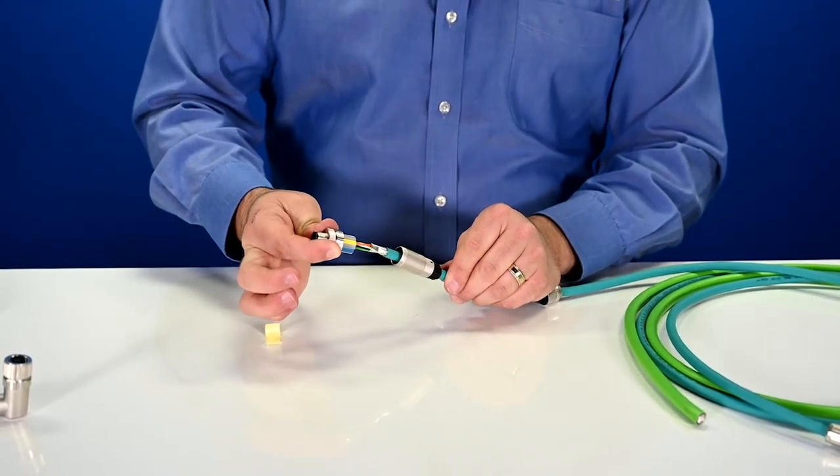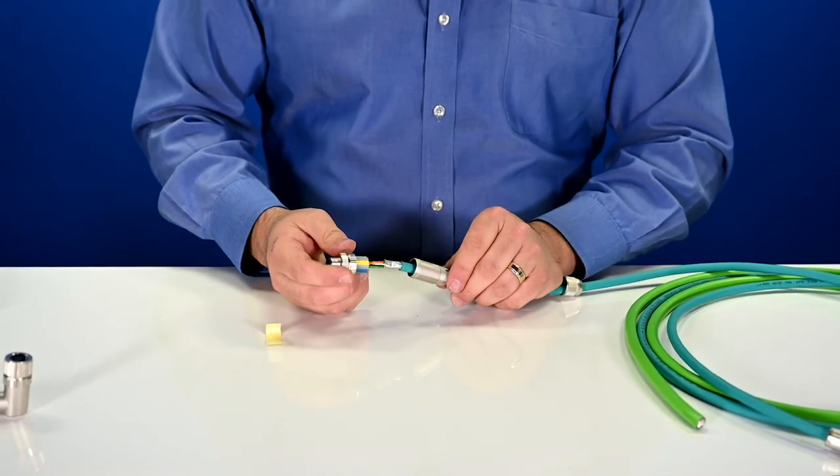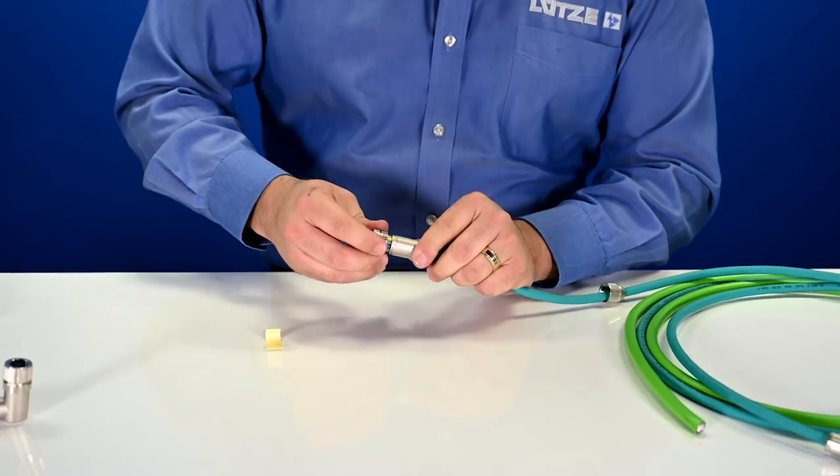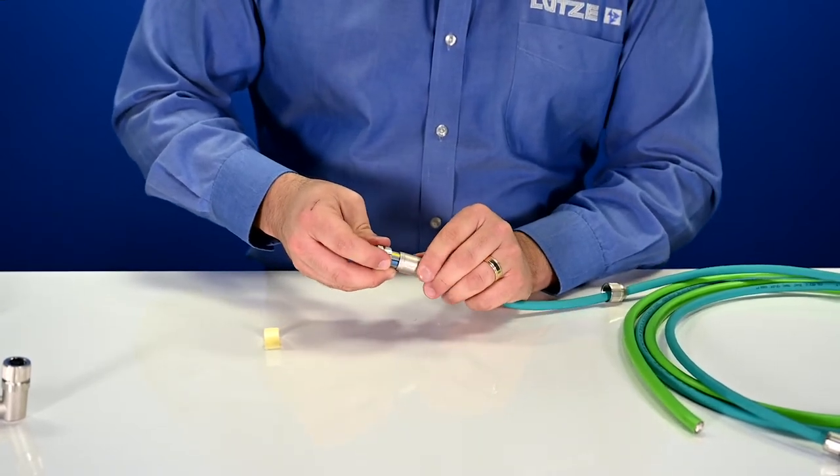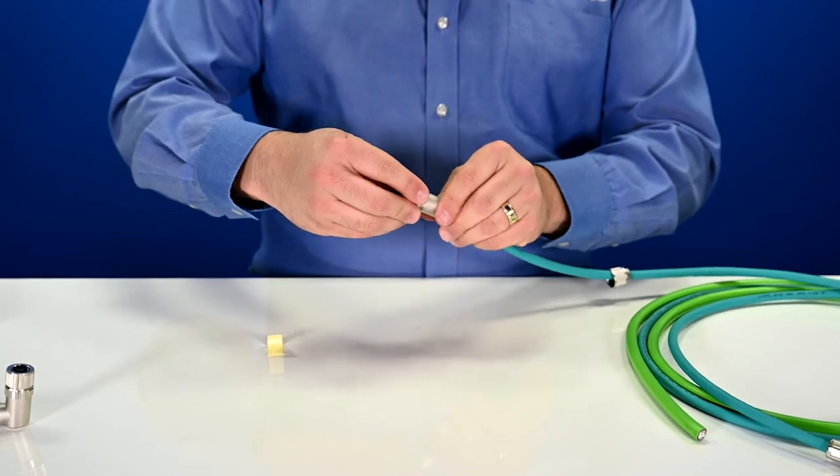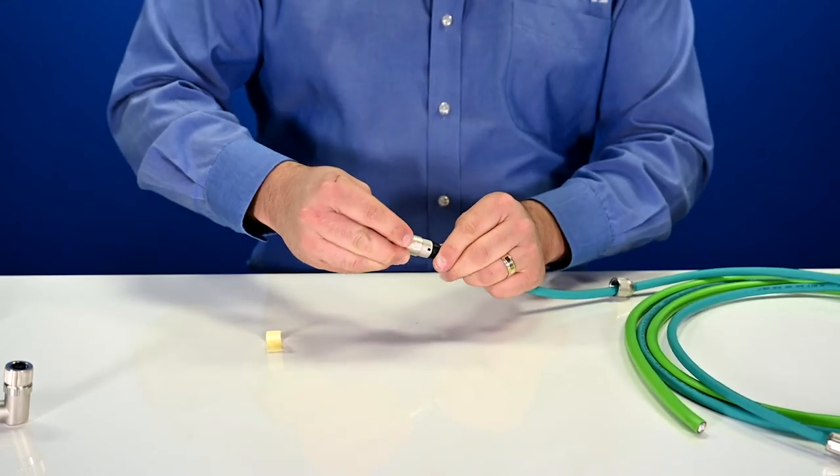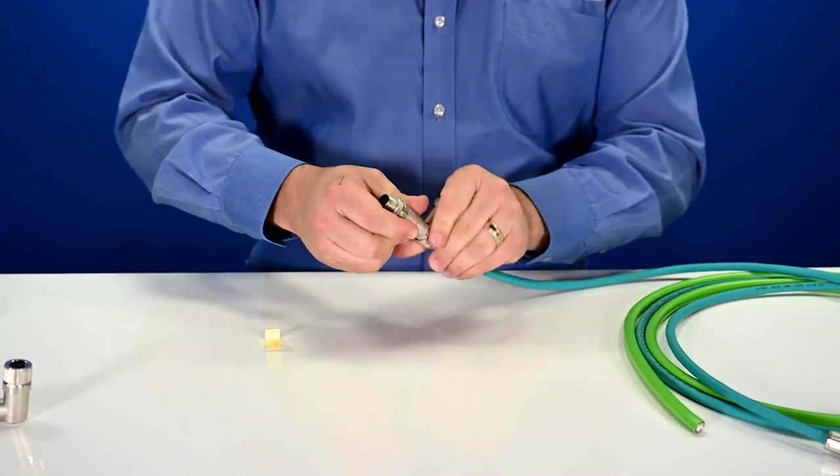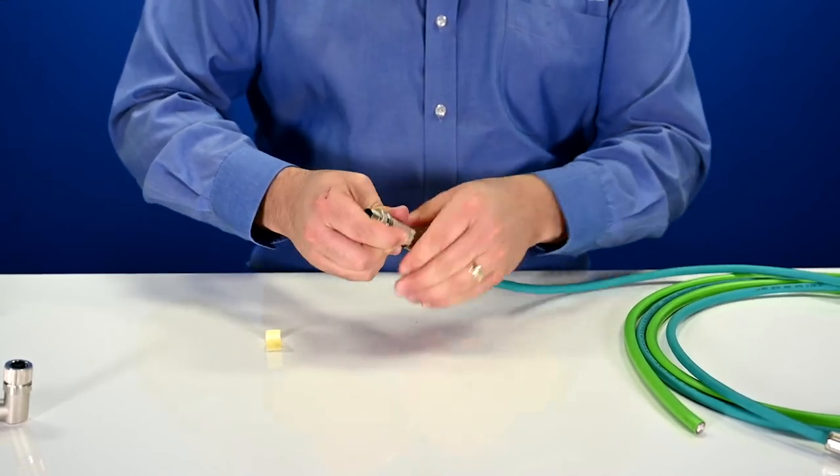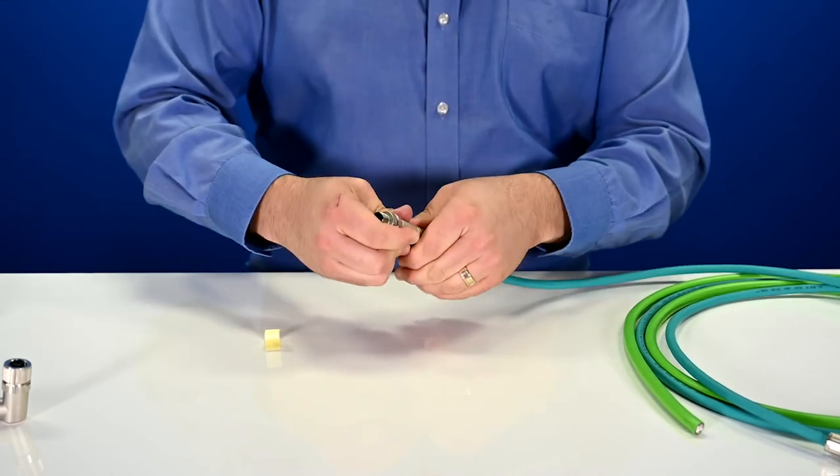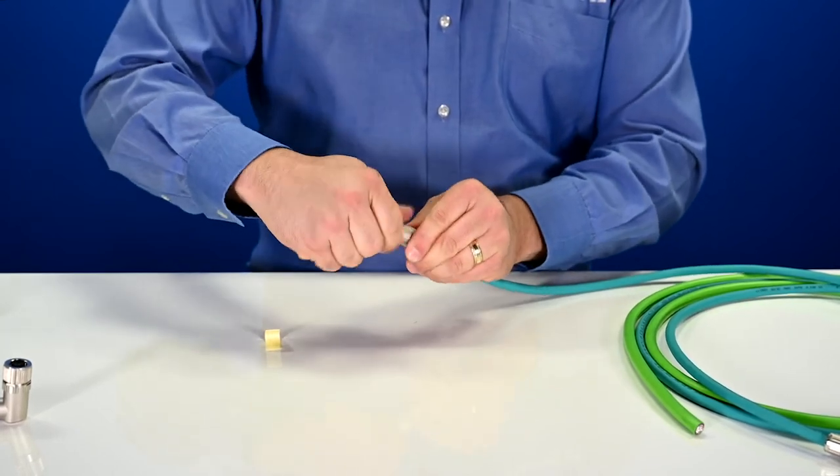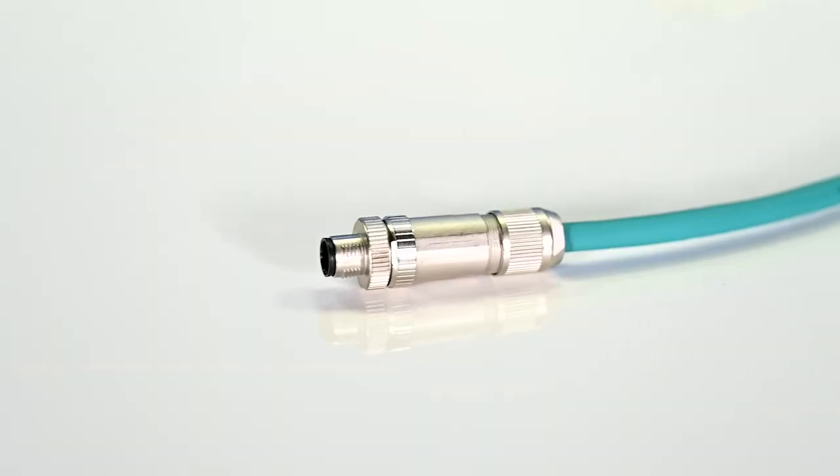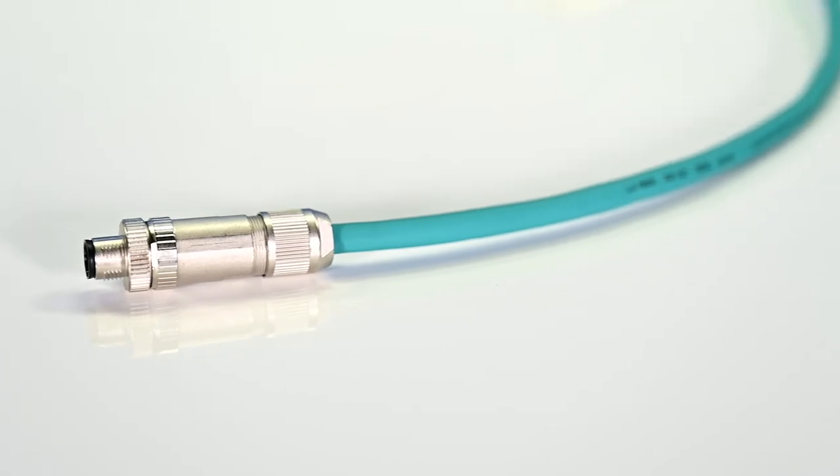Now that we have all of our conductors terminated, all we have to do is close up the housing. Simply slide the housing up over the connector. Make sure to rotate it so that it's aligned with the keyway, and it'll slide right on. Close that connector up and tighten down with the integrated strain relief. And now you have an M12 connector that's ready to terminate in the field.